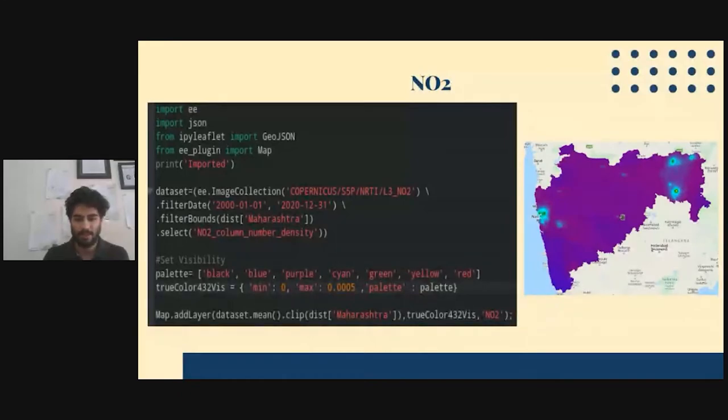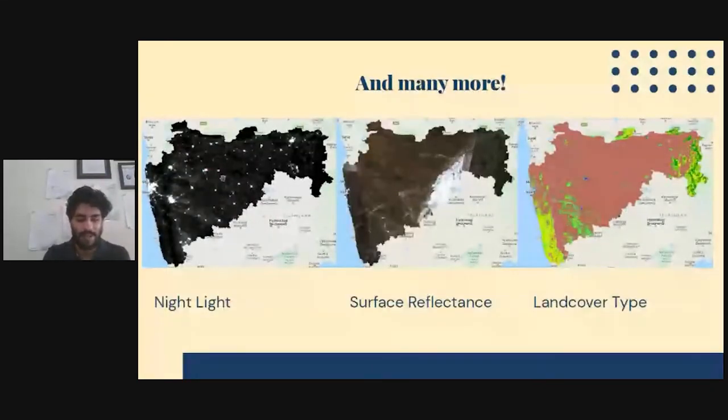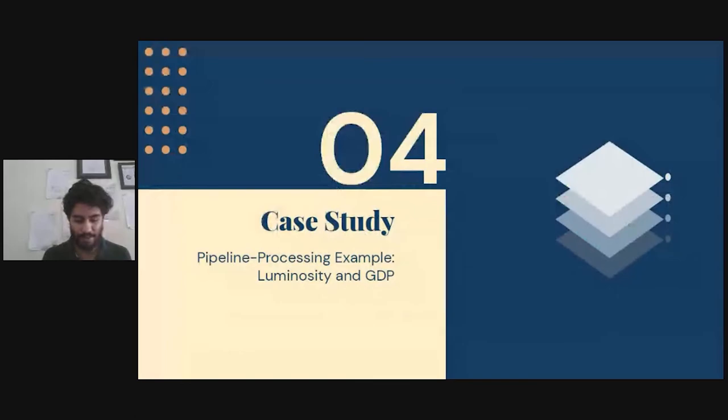This is NDVI, you can get things like NO2 similarly. In this case, we're using Sentinel-5 satellite, and Copernicus is the program. This works for everything: nightlight, surface reflectance, land cover, forest cover, you name it. Whatever is possible to grasp from satellite images, you can get it quite easily.